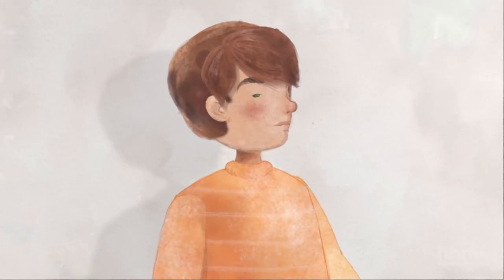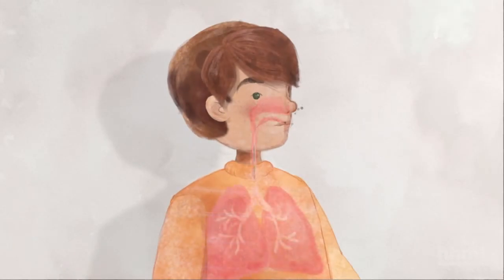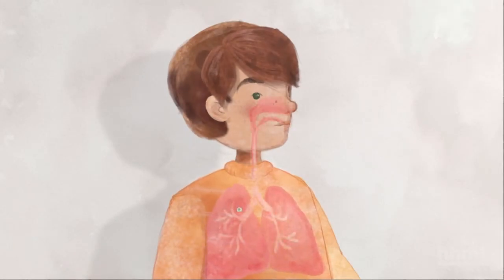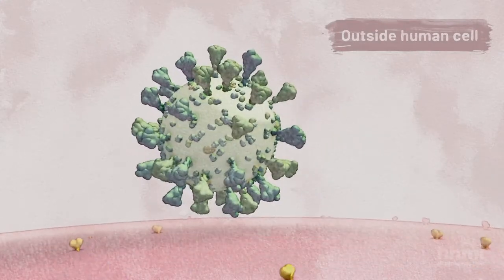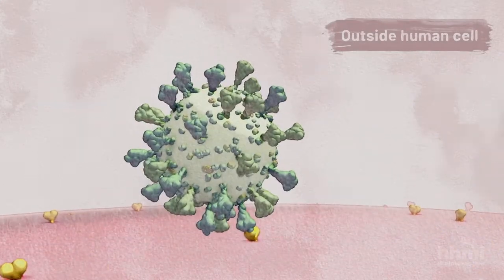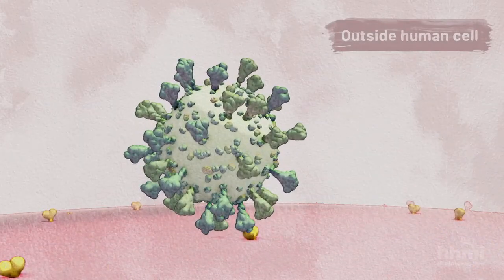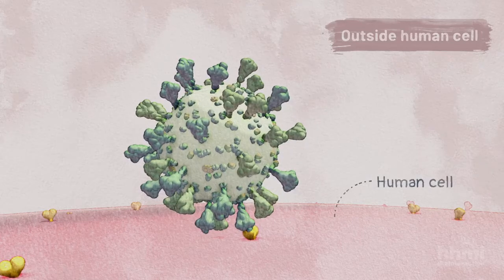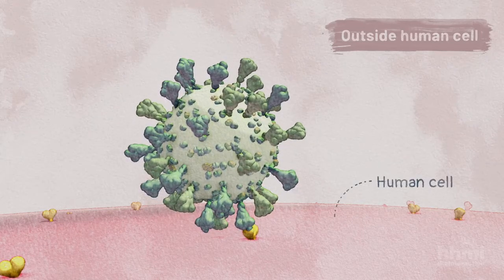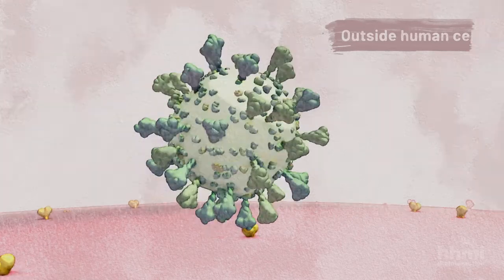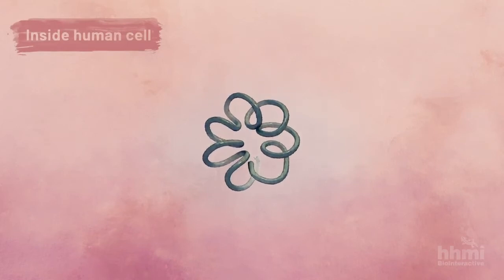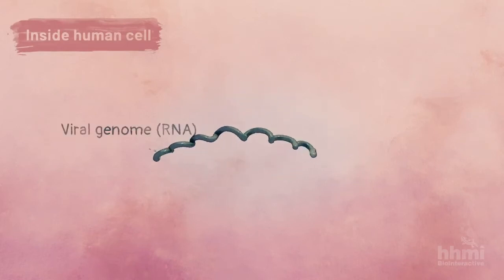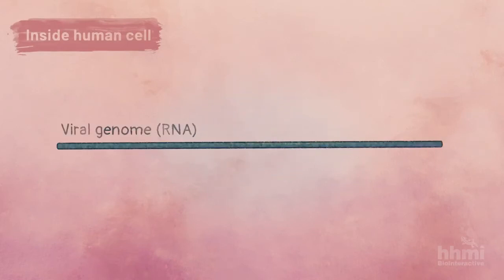Coronaviruses enter the body through the mouth or nose. The virus then has to get inside a human cell. The protein spikes on the virus's envelope attach to specific proteins on the surface of a cell. This causes the virus's membrane to fuse with the cell's membrane, releasing the virus's RNA genome into the cell.